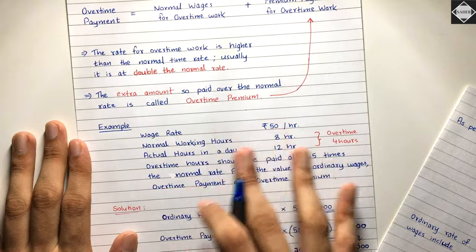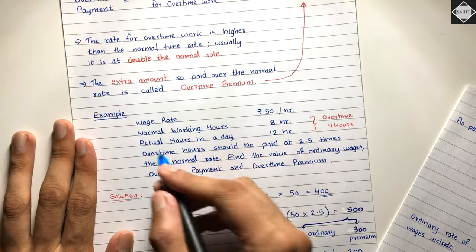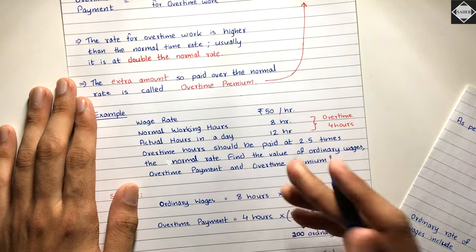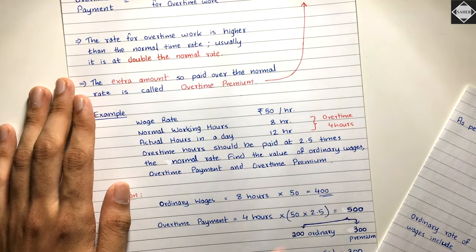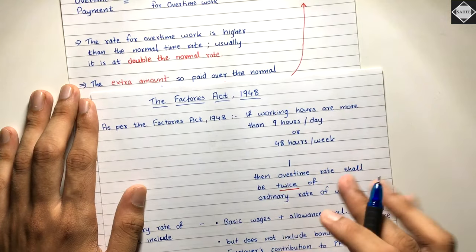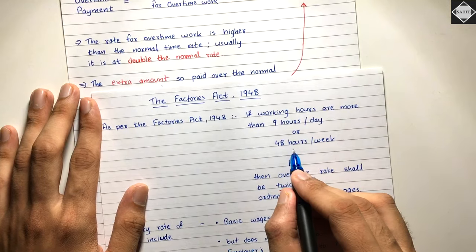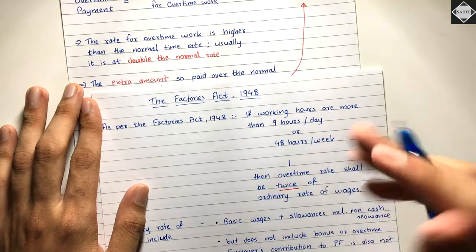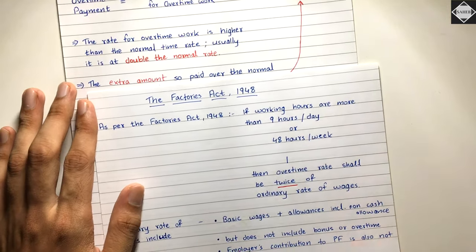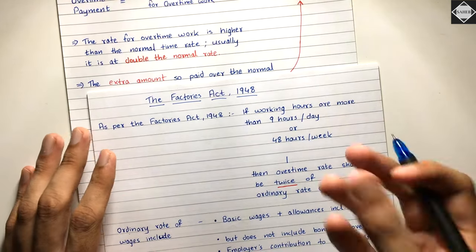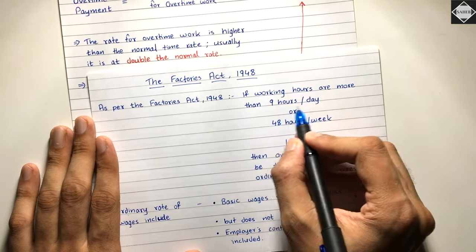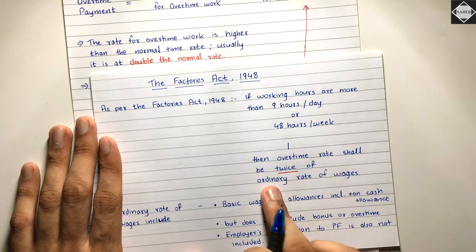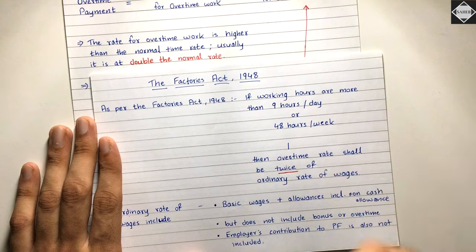In our earlier example, we compared normal working hours of 8 hours against actual hours of 12, giving 4 overtime hours — but that was without applying the Factories Act. If the company follows the Factories Act, you must apply the 9-hour per day limit and the 48-hour per week limit. Only hours beyond 9 per day or beyond 48 per week qualify as overtime. The Factories Act also states the overtime rate shall be twice the ordinary rate of wages — that's the minimum.